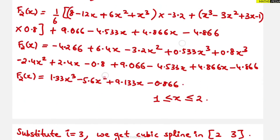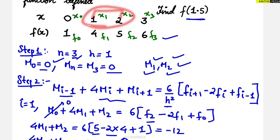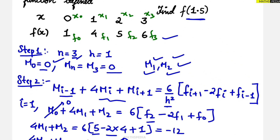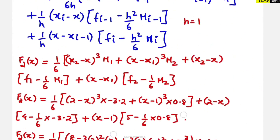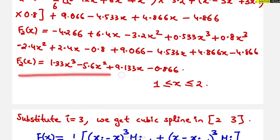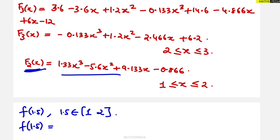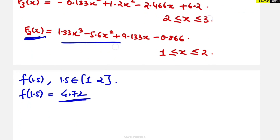The question asks for f of 1.5. Since 1.5 belongs to the interval 1 to 2, we use the second cubic spline function f2(x). Substituting x equals 1.5 into f2(x), we calculate the result. The answer for f of 1.5 is 4.72.